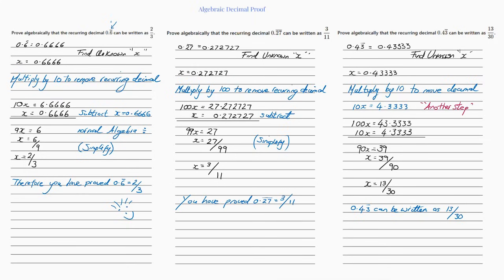First thing we need to do is find the unknown. We're going to call the unknown x, so x equals 0.6666. Now I need to get this 6 over the decimal place before I can solve this question, and to do that I'm going to multiply it by 10. So it now becomes 6.6666.